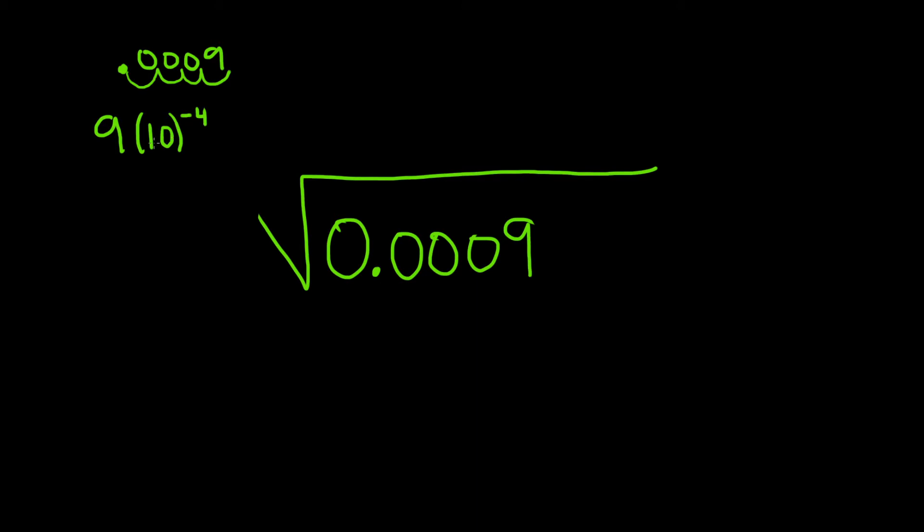And the reason is, if you go backwards now, you would get this, right? If you have 9.0, and you go four places to the left, 1, 2, 3, 4, and then you put zeros, you end up with what we started with.